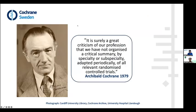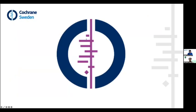This logo is for the Cochrane International Collaboration, and it represents a meta-analysis. The meta-analysis is this diamond at the bottom of this plot. Each horizontal line is an included study, the vertical line is a line of no difference, and the diamond is the meta-analysis — the quantitative synthesis of all studies.